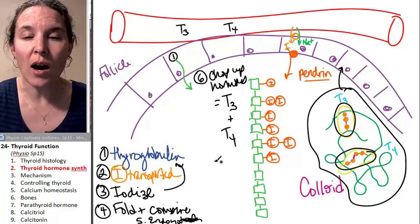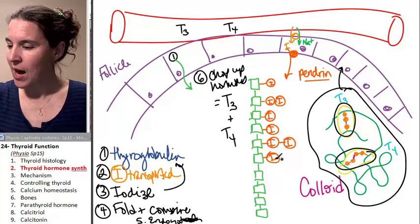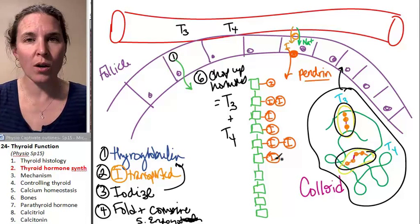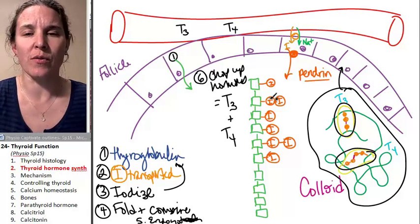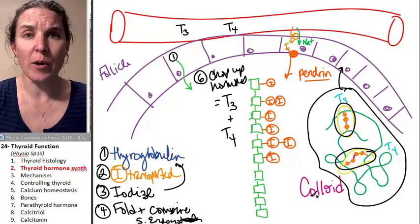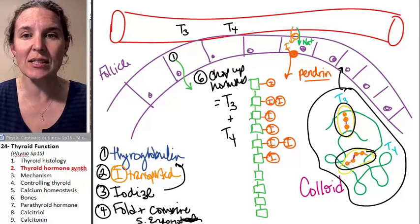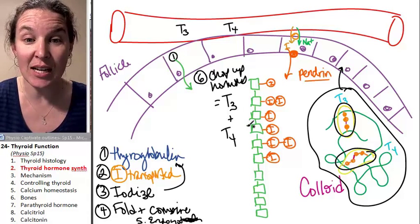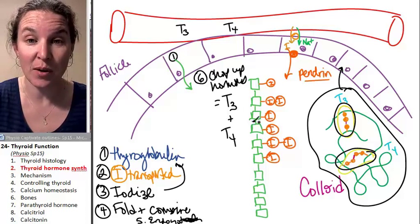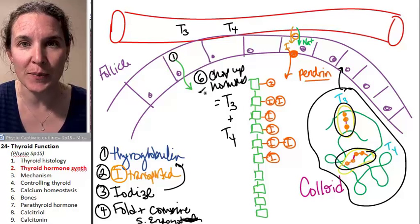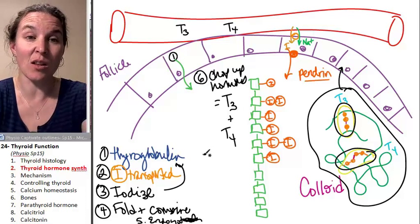You can store weeks worth of thyroid hormone in a single follicle, in the colloid. So you basically only endocytose this step when you need thyroid hormone. Otherwise, just leave it in the colloid and save it for later.